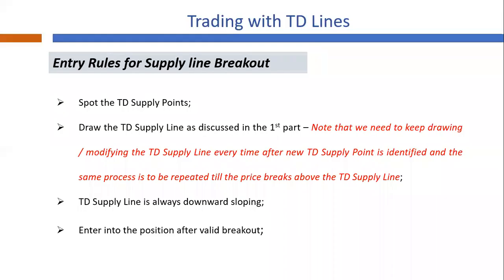First, we will be looking at long entries. The first step is to spot the TD supply points and draw a TD supply line as discussed in part 1. Keep drawing or modifying the TD supply line after a new TD supply point is identified, and repeat this process till the price breaks above it. TD supply line is always downward sloping — a horizontal TD supply line has little significance, so only downward sloping lines are considered. Price should break above the TD supply line before considering a trade.